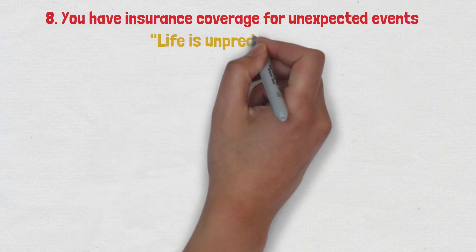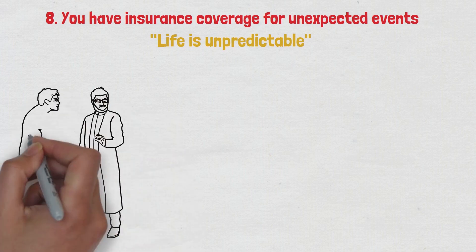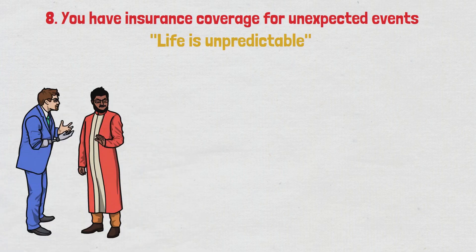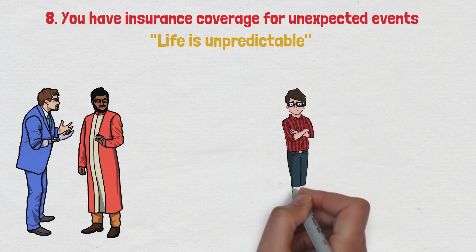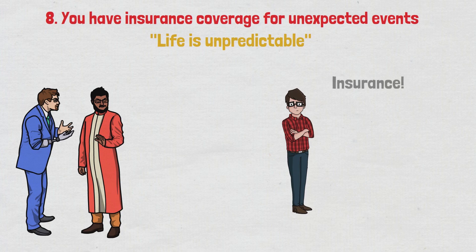Number eight, you have insurance coverage for unexpected events. You've probably heard the saying, life is unpredictable. You never know when you might lose your job, have a car accident, fall seriously ill, or even face challenges that impact your family members. It's the harsh reality of life, but there's a way to guard yourself against these uncertainties. Insurance. Getting insurance can offer a shield against these unexpected events, providing financial support when you need it most. It's like having a safety net that catches you when you fall.